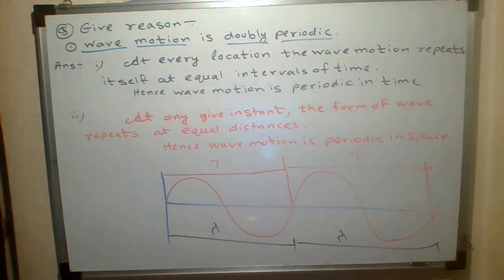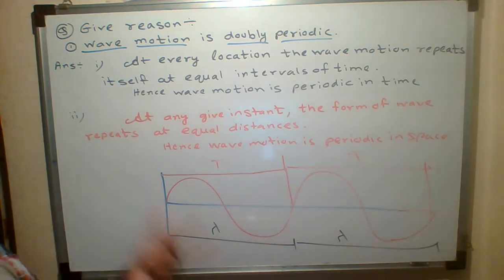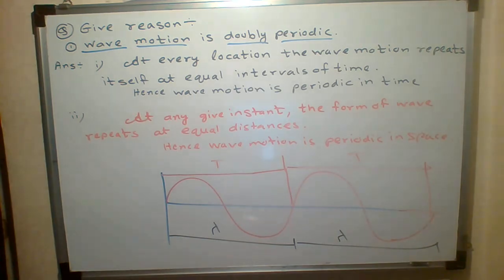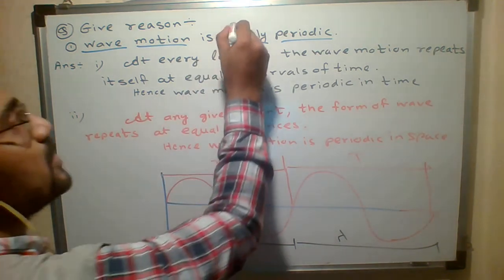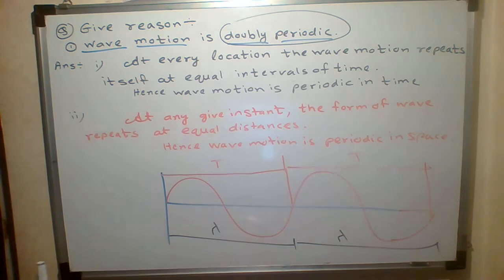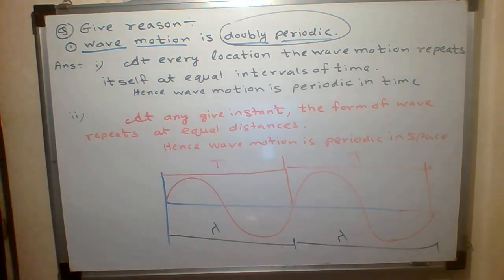We observe that wave motion is periodic in time as well as periodic in space. That is why this wave motion is called doubly periodic. Hope you understood the answer. Please copy.